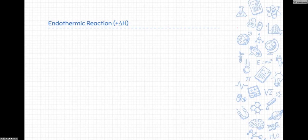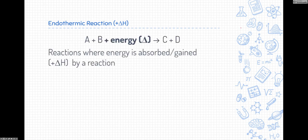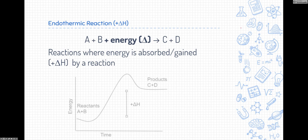All right. The opposite of exothermic reactions are endothermic reactions, and they're positive delta H. So if we look at the actual reaction itself, we have our reactants. And in this case, energy is a reactant because energy goes into the reaction. And then after all the reaction happens, we get C and D, which are products. So reactions where energy is absorbed or gained by a reaction, that's called an endothermic reaction. And it's positive delta H.